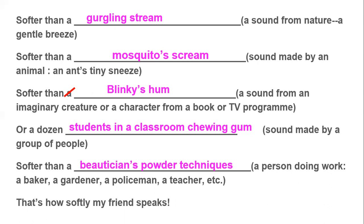Softer than the beautician's powder techniques — imagine going to a beauty parlor where the beautician is putting powder on your face. Would you hear any sound from that? Barely. Now let me read the entire second example: softer than a gurgling stream; softer than a mosquito's scream; softer than Blinky's hum, or a dozen students in a classroom chewing gum; softer than a beautician's powder techniques — that's how softly my friend speaks. If you can't hear a beautician putting powder on your face, imagine if you'd ever be able to hear your friend speaking.